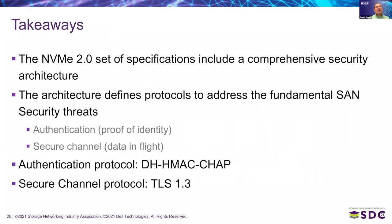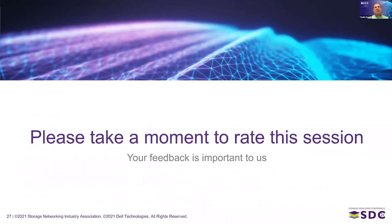We arrive at the end of this session — I hope you found it interesting and useful. Key takeaways: the NVMe 2.0 set of specifications includes a comprehensive security architecture that defines protocols to address the fundamental SAN security threats of authentication (proof of identity) and secure channel to protect data in flight. The protocols defined are DH-HMAC-CHAP for authentication, and TLS 1.3 leveraged in an NVMe-oF environment based on IP for the secure channel. Thank you very much for watching; please take a moment to rate this session.